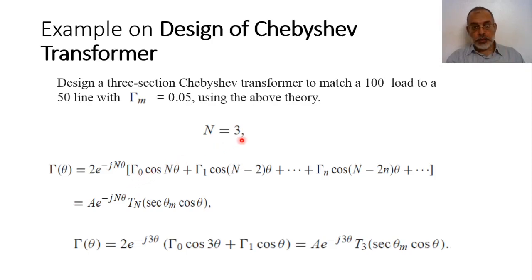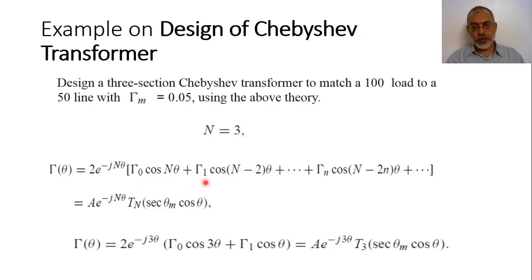In our case, n is 3, so it is required to obtain 4 reflection coefficients. From the symmetry equation, we are going to obtain only 2, and the other 2 will be obtained from symmetry.